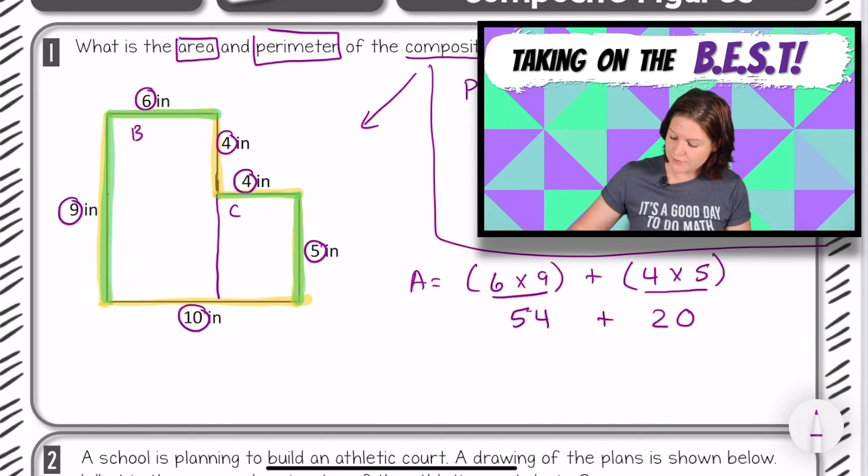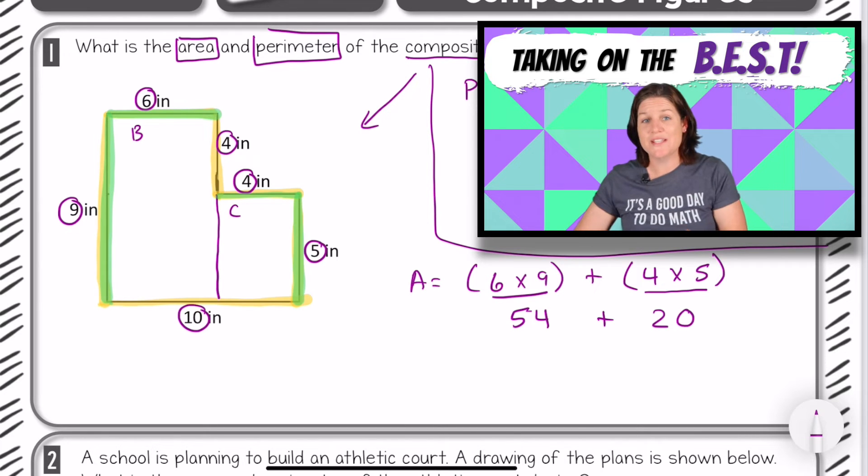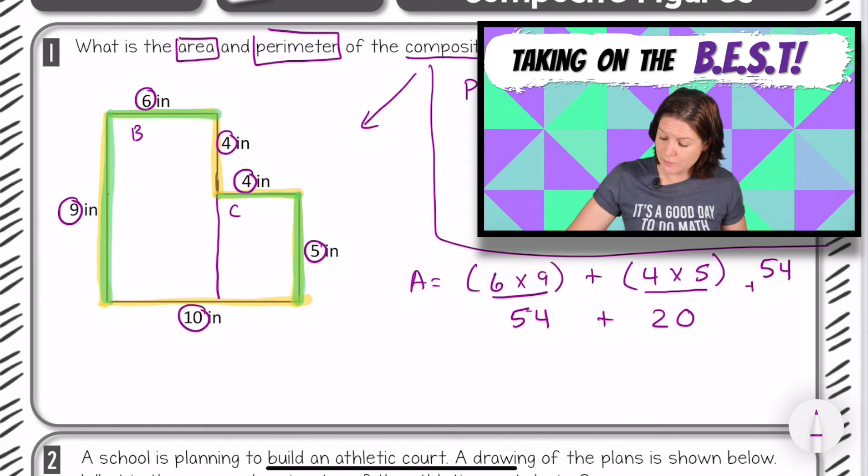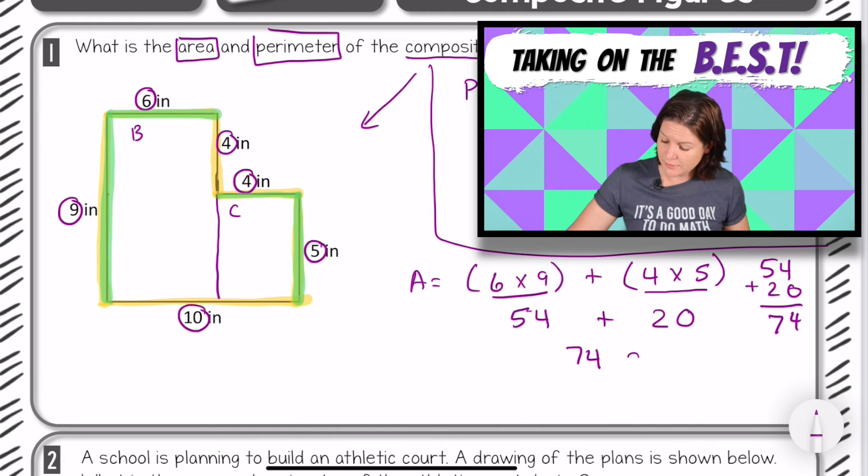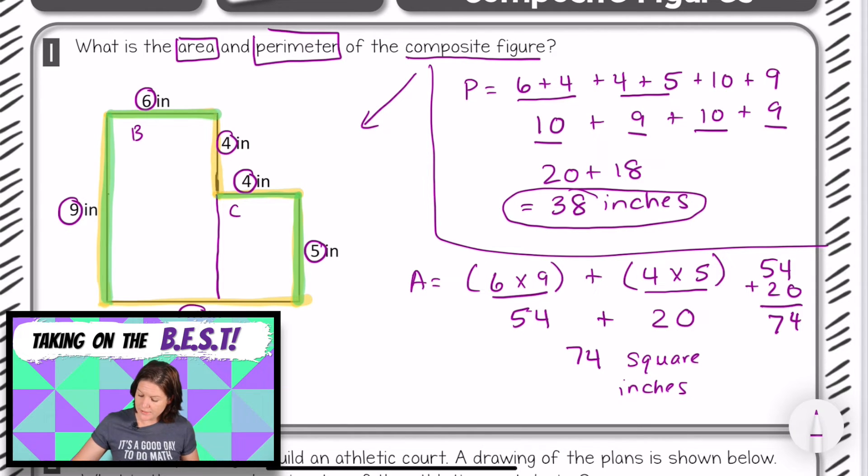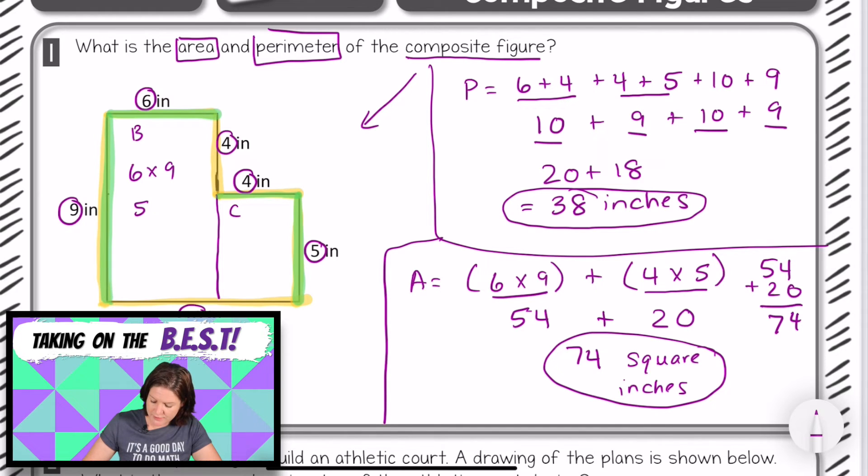So 6 times 9 equals 54, and now we have 54 plus 20, which equals 74. We're talking about area, so that would be 74 square inches. Okay, so we've got our perimeter here, 38 inches, and our area here, 74 square inches. So go ahead and make sure that you have all this copied. I'm also going to just write in here that we figured out 6 times 9 equals 54 square inches, and that 4 times 5 equals 20 square inches, just to show that we found both of them and that we combined them together. So make sure you have all that copied, and then join me for number 2.